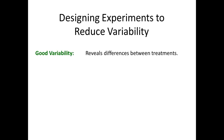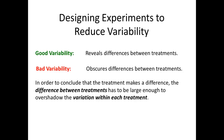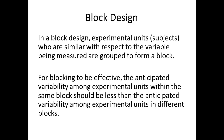Designing experiments to reduce variability: there's good variability that reveals differences between treatments, and bad variability that obscures them. In order to conclude that the treatment makes a difference, the difference between treatments must overshadow the variation within each treatment. A well-designed experiment should control for as much within-treatment variability as possible. In a block design, experimental units or subjects who are similar with respect to the variable being measured are grouped to form a block. The anticipated variability among units within the same block should be less than the variability among units in different blocks; individuals in a block should be as homogeneous as possible.